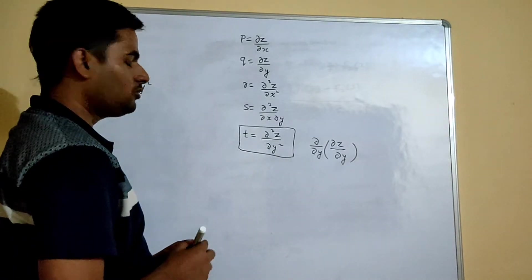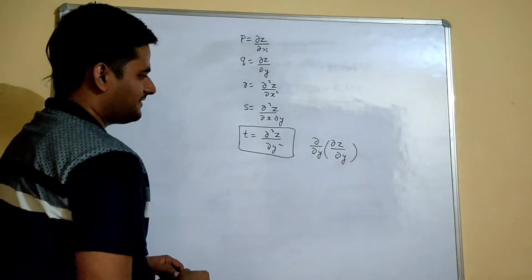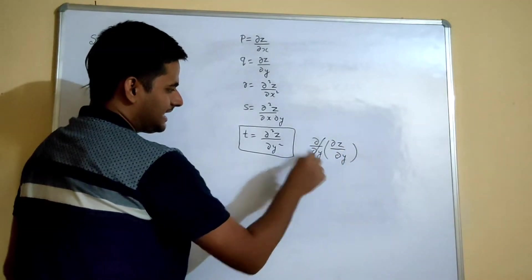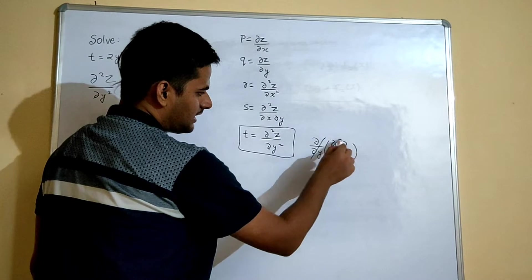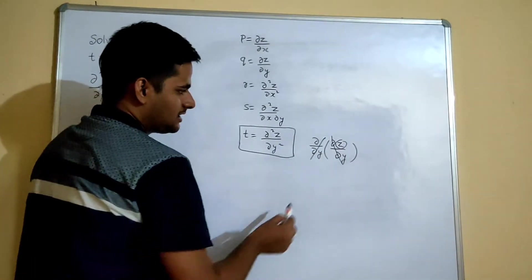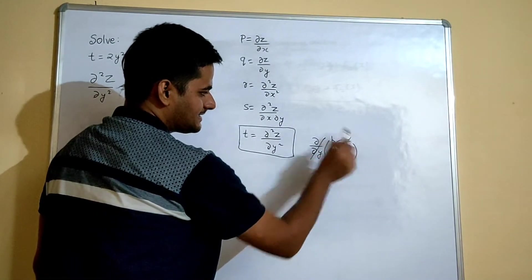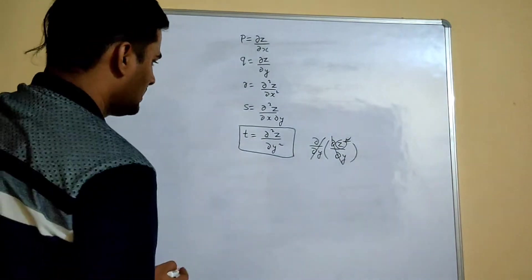Now how to solve this? First we will remove this del by del y, and then we will remove this del by del y, so as you finally get this z.